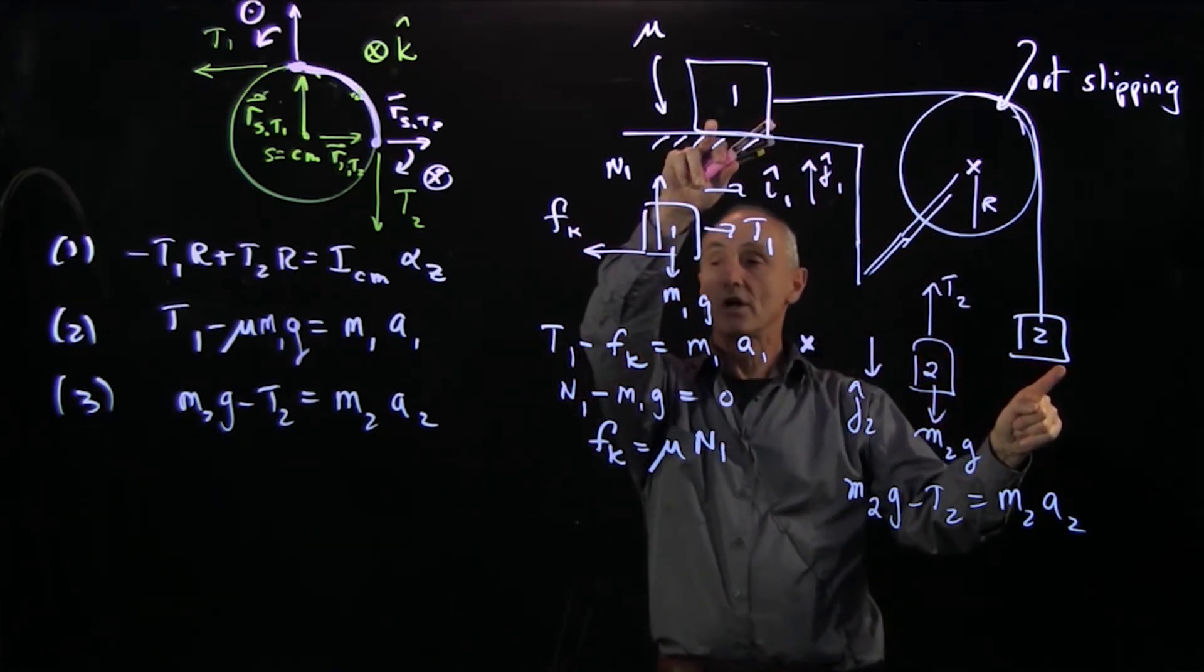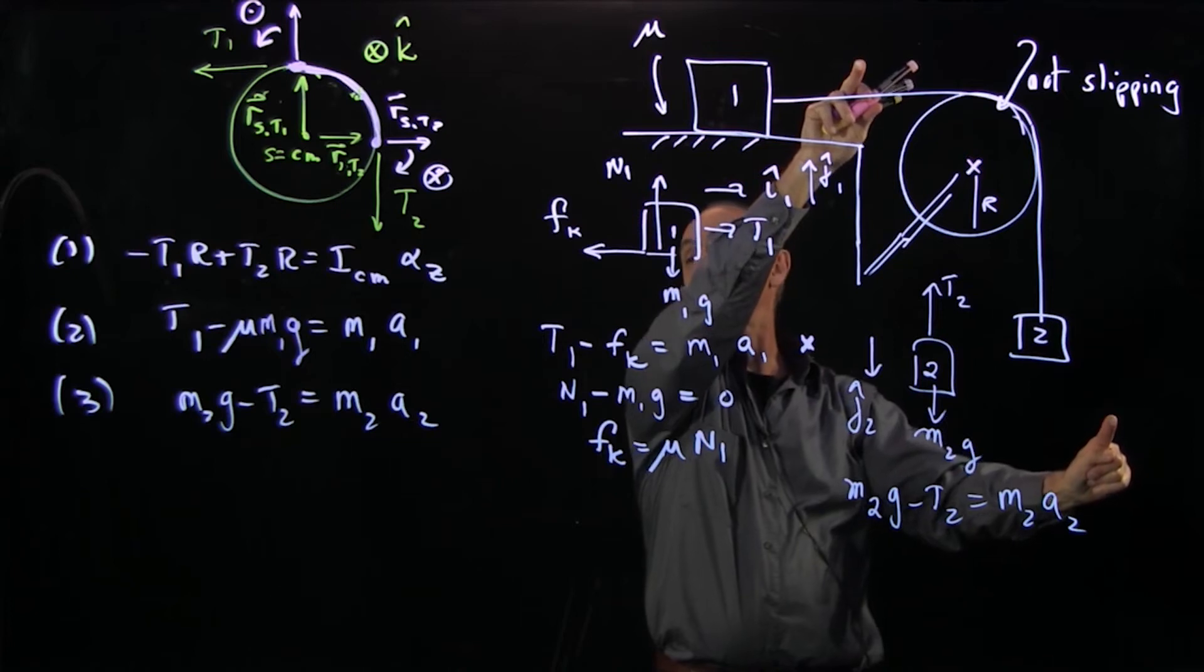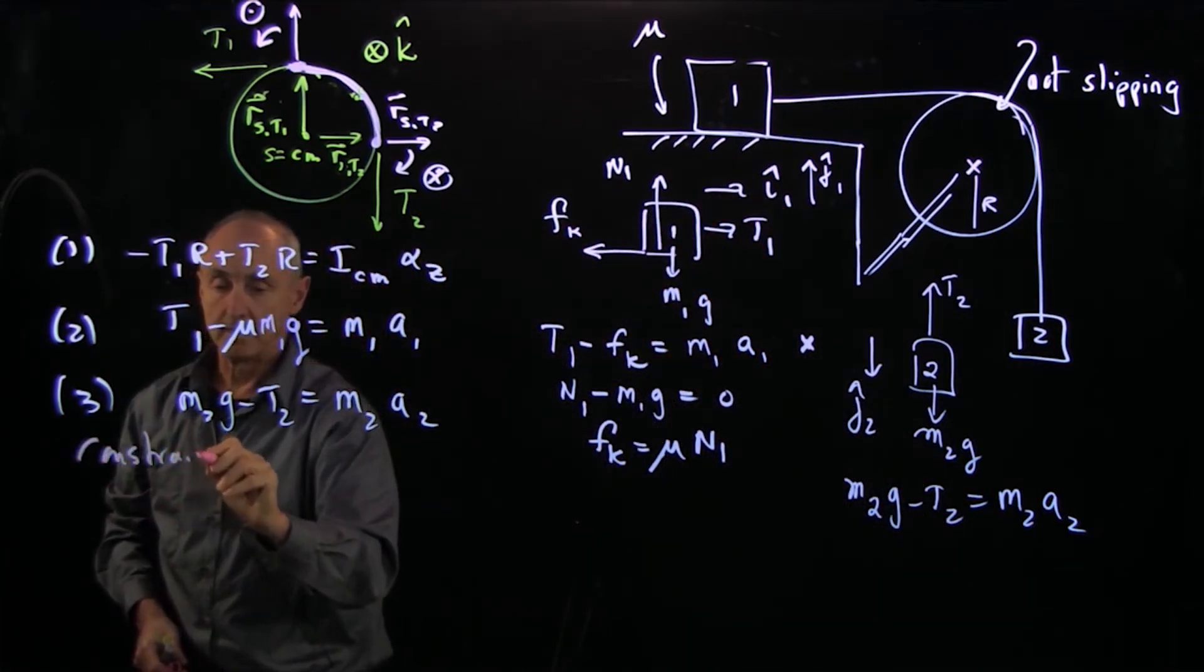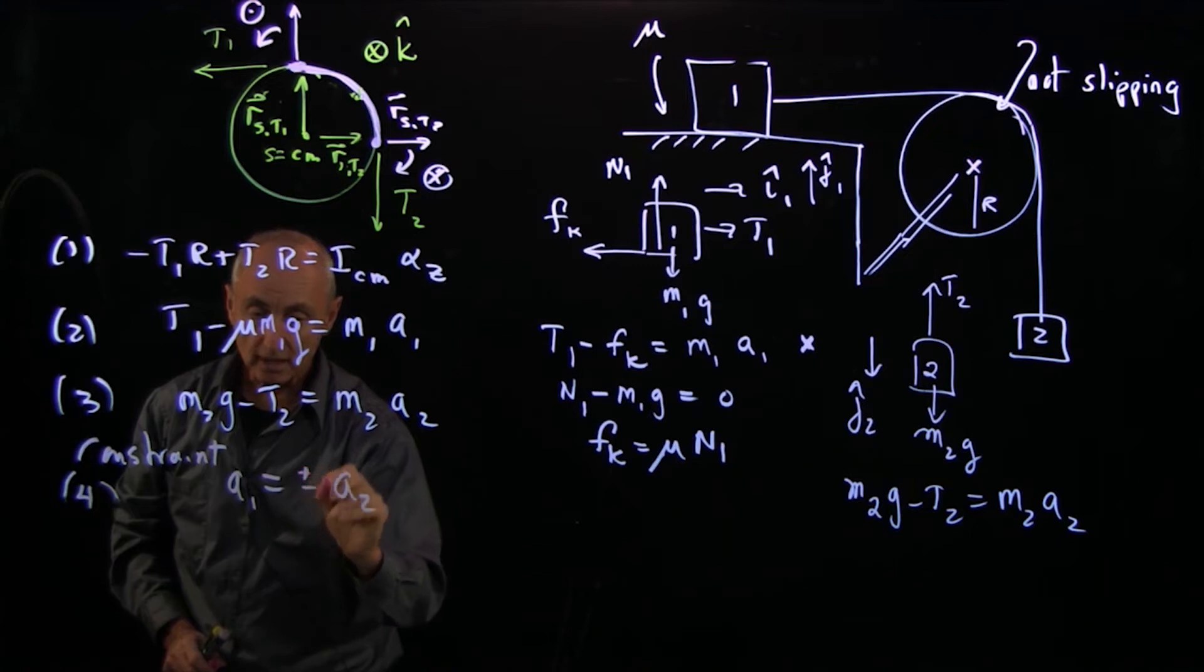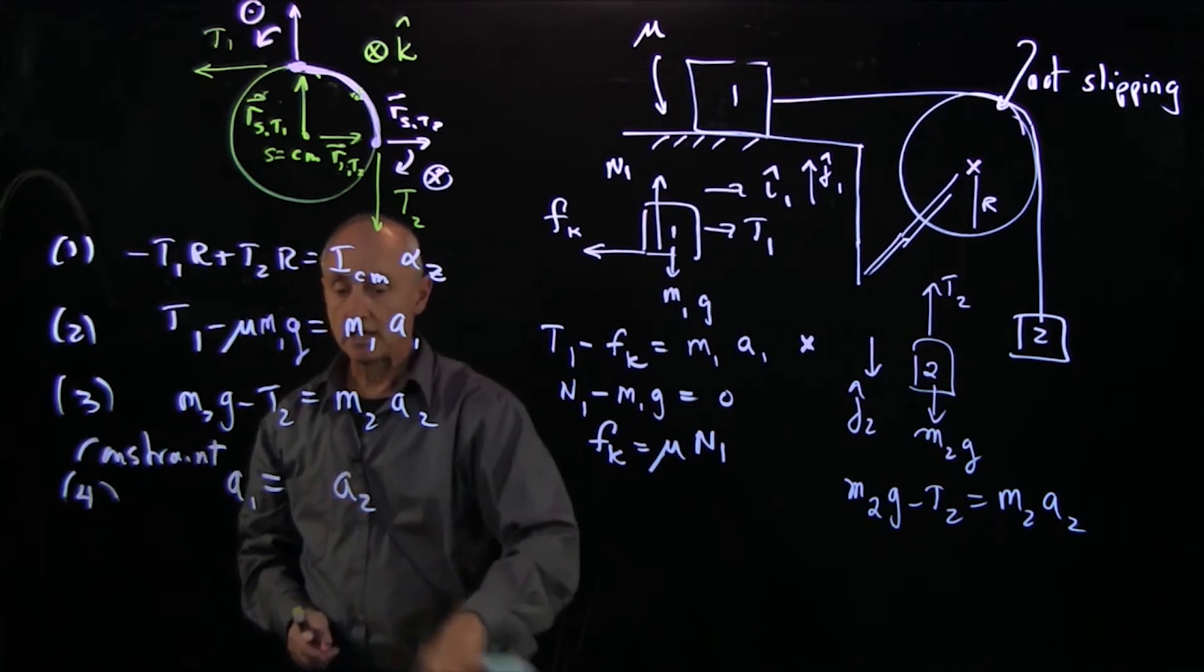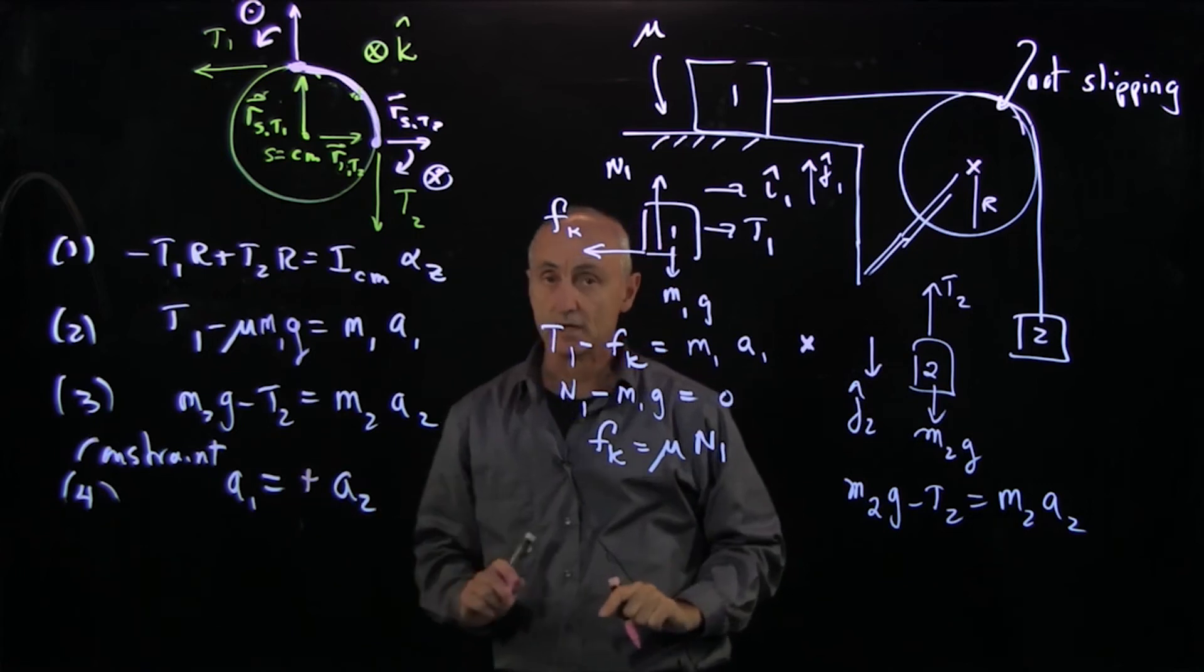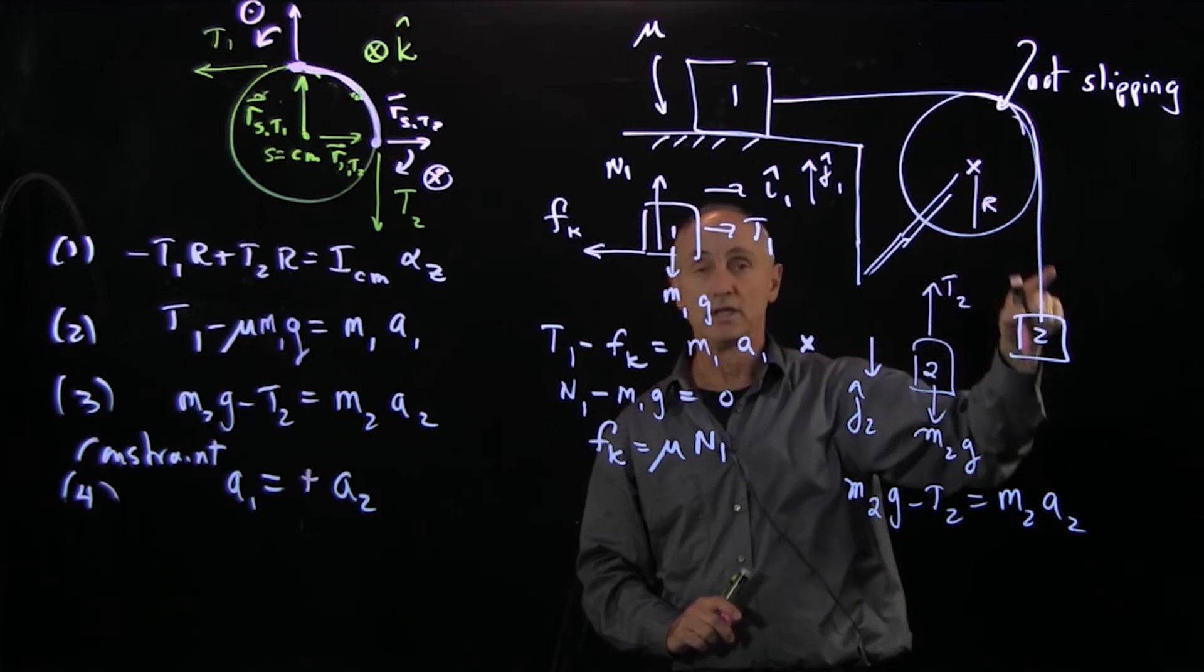Let's consider mass 1 and 2. They're attached by a string. As mass 2 goes down, mass 1 goes to the right. The string is not stretching, so they're moving at the same rate, so they have the same acceleration. So my first constraint is that A1 equals A2. Now in general I have to be careful, plus or minus. Why is it a plus sign and not a minus sign here? It's a plus sign because I've chosen i hat to the right and I've chosen j hat downwards. If I'd chosen them differently, that sign could have varied.